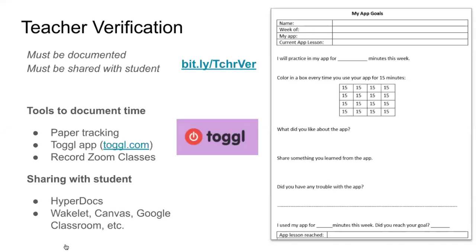Some students prefer not to use a paper tracker since they use their phones, so some teachers have their students use time tracking apps, and one of them is Toggl. On the Toggl website and smartphone app, when a student is ready to begin an app or website activity, they can start the Toggl app and make a note of what app or activity they're doing. They do their learning and practice, then tap the stop button, and it captures that time with a tagged label for the activity. They can then share that with their teacher via a screen capture.